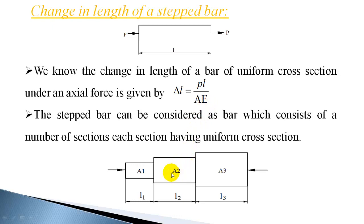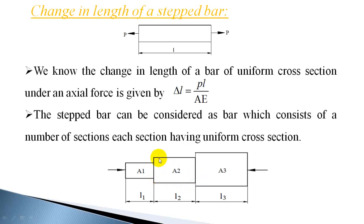Now if we consider a step bar, a step bar can be considered as a bar which consists of a number of sections, each section having a uniform cross section. In the figure I have shown three sections — this step bar with three sections. Section 1 has area of cross section A1 and length L1. Section 2 has uniform area A2, and section 3 has uniform area of cross section A3.